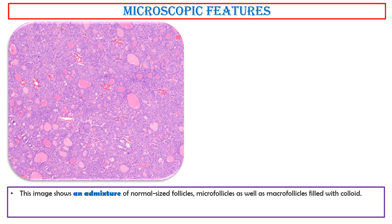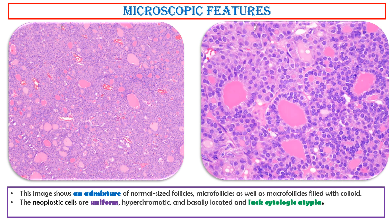Microscopic features. This image shows an admixture of normal-sized follicles, microfollicles, as well as macrofollicles filled with colloid. The neoplastic cells are uniform, hyperchromatic, and basally located, and lack cytologic atypia. Mitotic activity is not increased.